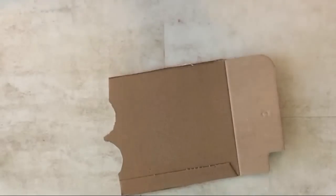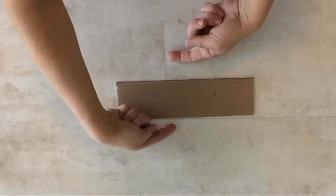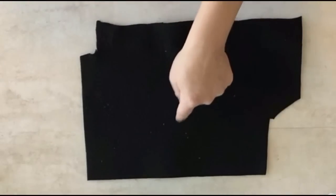Next, with another piece of cardboard, you're going to cut out a long rectangle to the width and length you want your pencil case to be. Next, with your piece of material, you're going to glue the entire rectangle into the center.